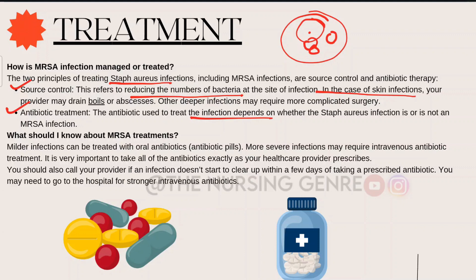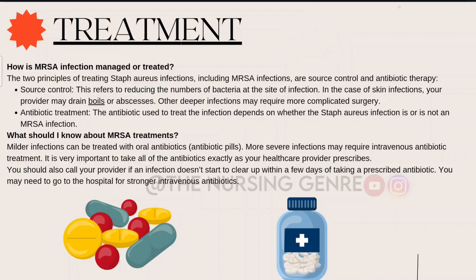Milder MRSA infections can be treated with oral antibiotic pills, while severe infections require intravenous (IV) antibiotics. It is very important to take all antibiotics exactly as prescribed by your healthcare provider. If an infection does not start to clear up within a few days, contact your provider, as you may need to go to the hospital for stronger intravenous antibiotics.